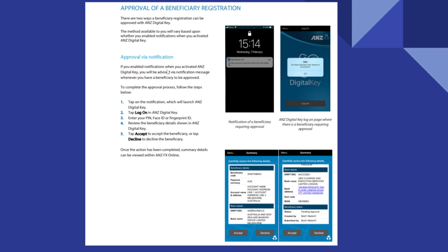If you enabled notifications when you activated ANZ Digital Key, you will be advised via notification message whether you have a beneficiary to be approved. To complete the approval process, follow the steps I'm going to describe.